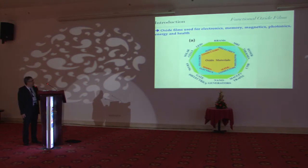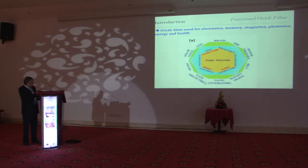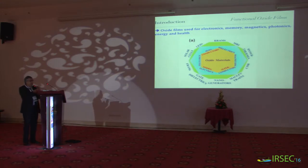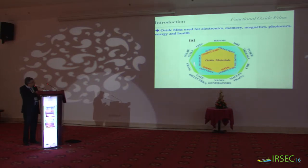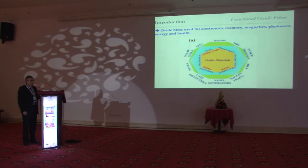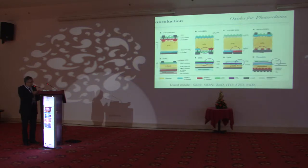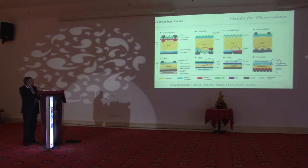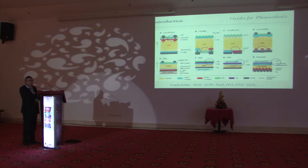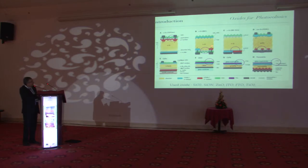This picture summarizes all kinds of applications of oxide materials, going from electronics, memory, magnetic, photonics, to energy. All such properties can also be used for several applications. We'll focus mainly on photovoltaics. You can find oxides in several types of devices — it starts with silicon, for instance, where you find silicon oxide as very important for passivation, and then in different other devices mainly as a TCO.